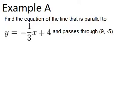Example A says, find the equation of the line that is parallel to y equals negative one-third x plus four and passes through nine, negative five.